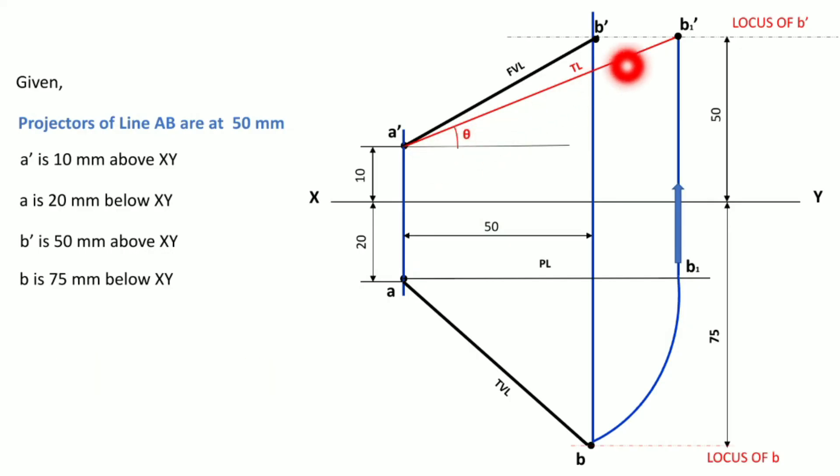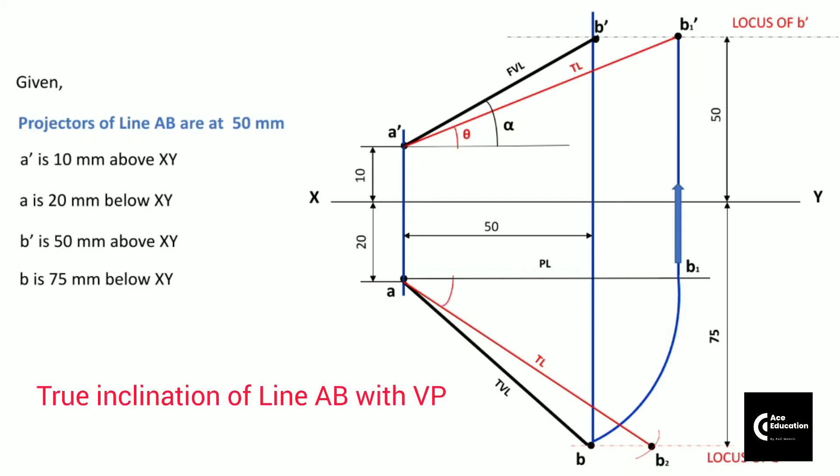Now, by having this true length in compass, you can take point A at center and you can cut an arc on this locus of point B. So you get the arc on the locus of point B, that is point B2, and join this point B2 with point A. That is the true length in top view. Now you can measure the angle made by this true length in top view. This angle will be angle phi.